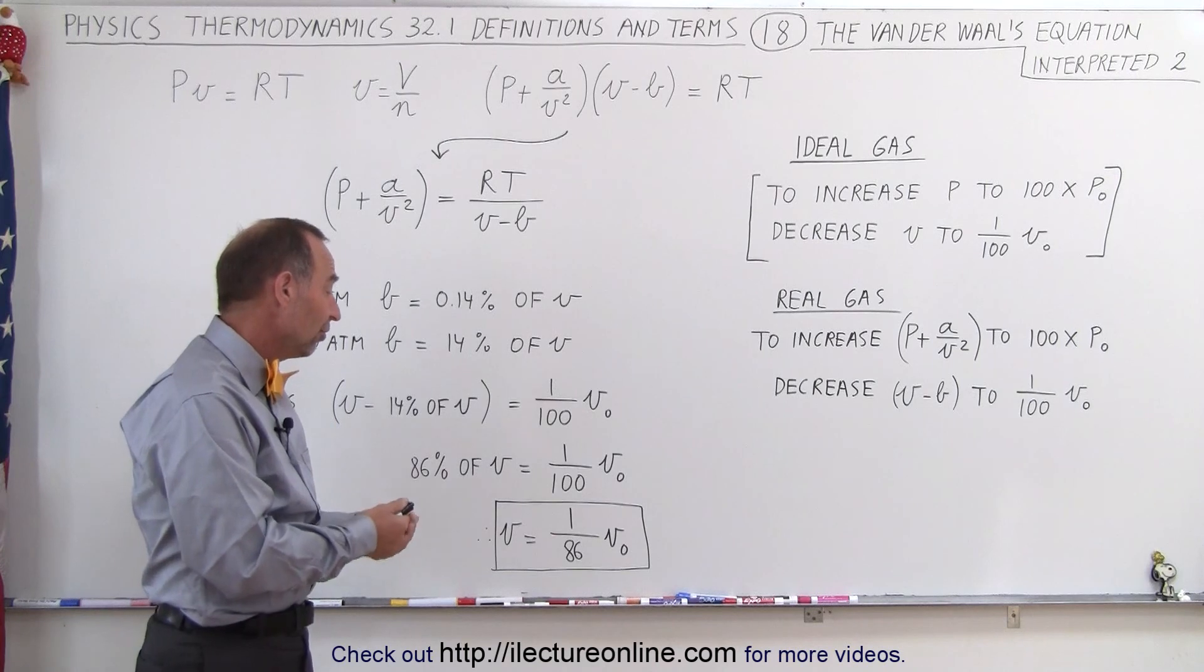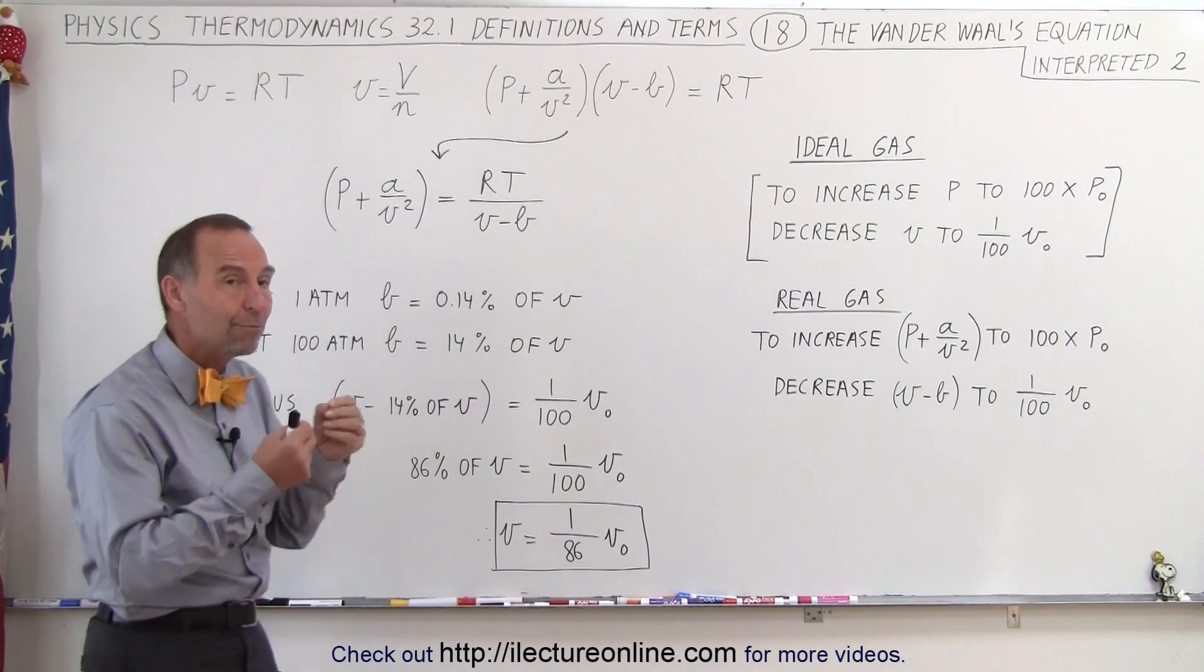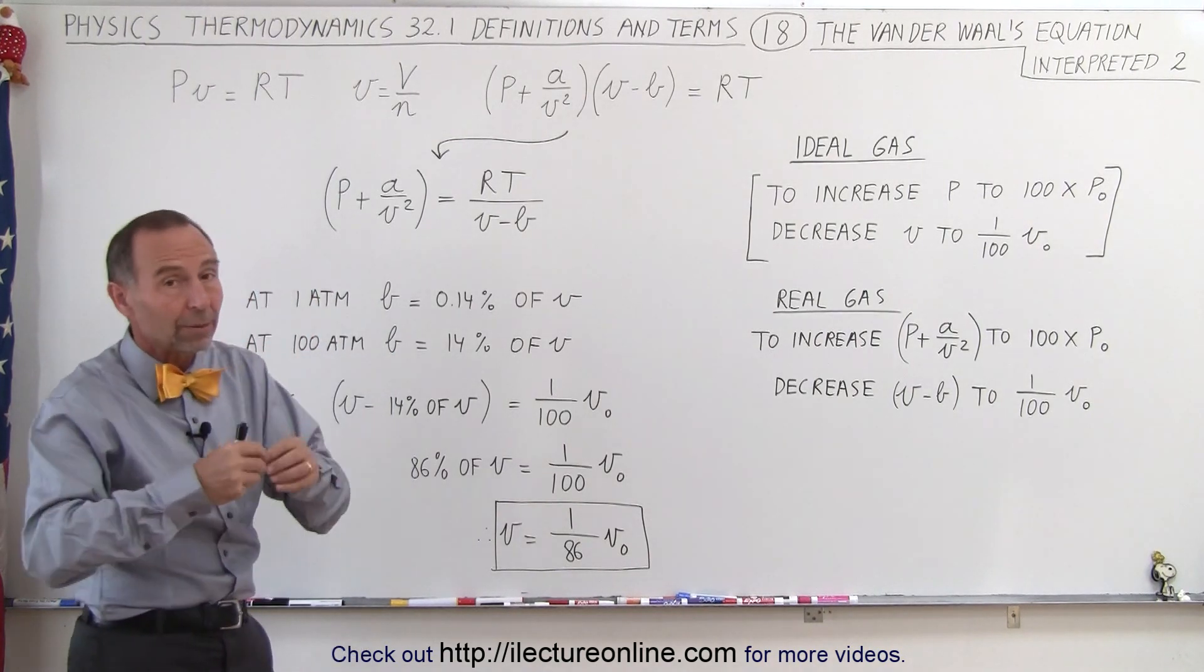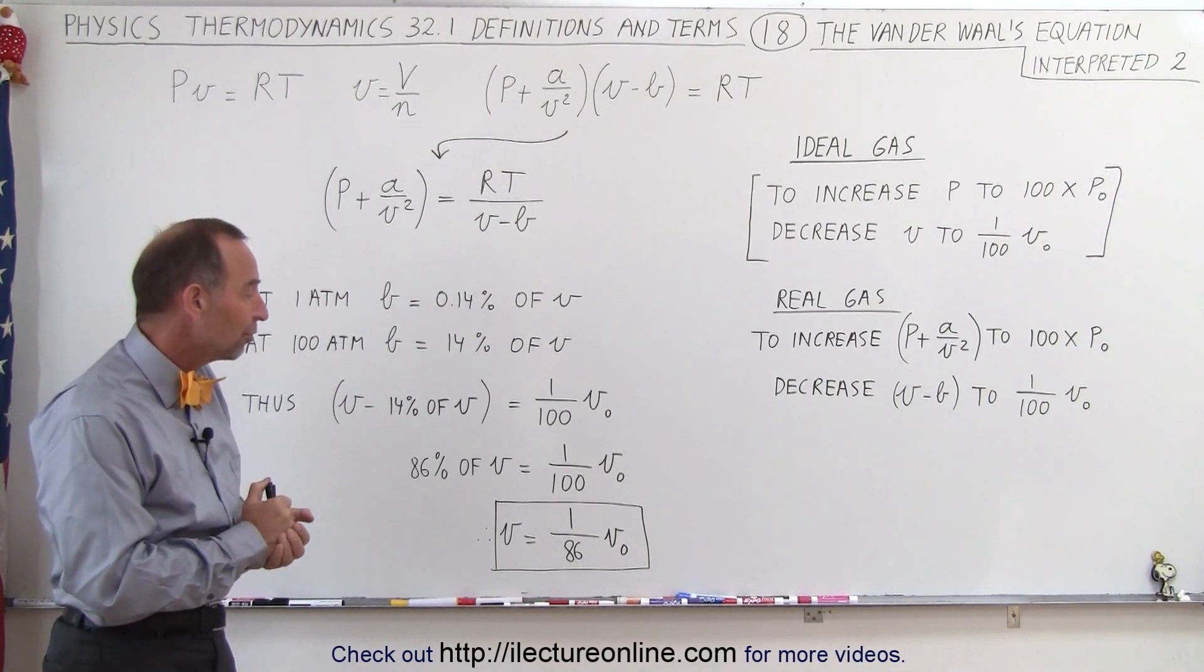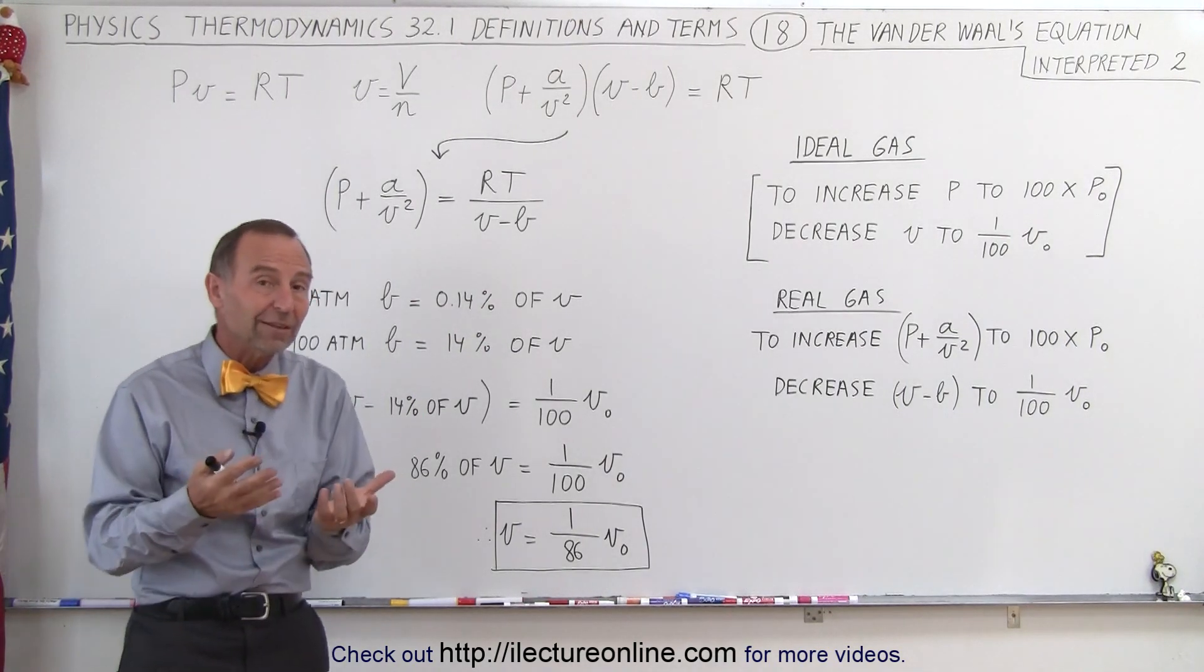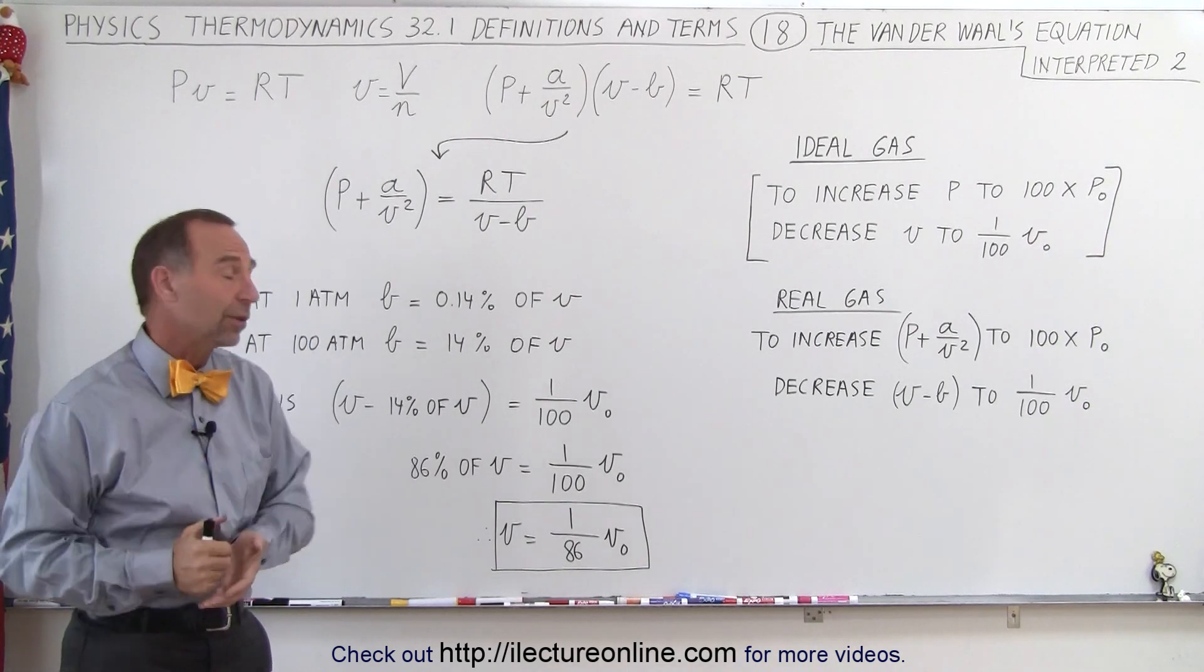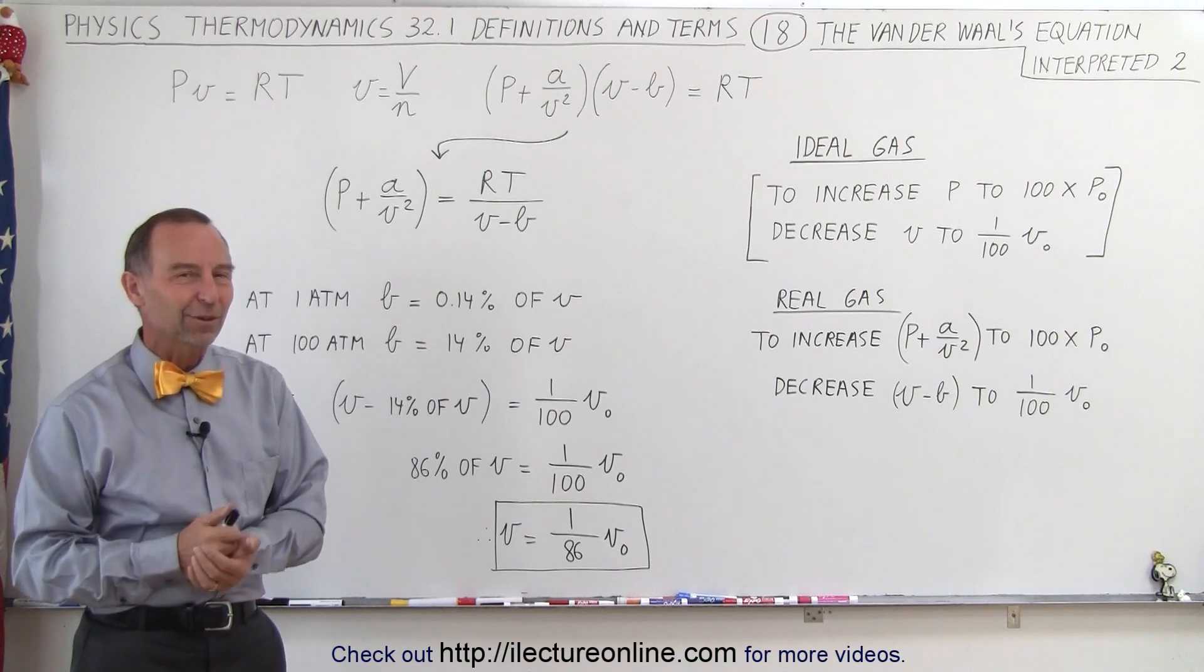The difference, the other 14%, well that comes from the fact that we have b which represents the actual volume of the molecules, which becomes significant when the gas is compressed 100 times the original atmosphere. So the other 14% comes from the volume of the molecules themselves taking up part of the volume of the container, and that's how we can understand van der Waals equation.